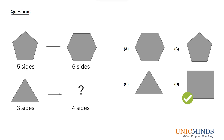In problems like this you typically have to understand what is the relationship in the above diagram first. In the above question, on the leftmost pattern there is a five-sided figure which is a pentagon — a five-sided polygon which got transformed into a six-sided polygon. So five sides became six sides, meaning five got added by one and became six.